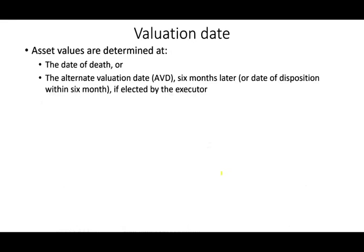What we also need to look at is the valuation date. When do we value the asset? The valuation date is either the date of death or an alternative valuation date (AVD) — which is six months after death, or the date of disposition if the asset is sold within six months. To elect the alternative valuation date, it must reduce both the gross estate and the estate tax liability. When a person passes away and the executor chooses the alternative valuation date, they are hoping the value of the assets goes down — because if the value goes down, they pay less taxes. It's counterintuitive, but that's how it works.